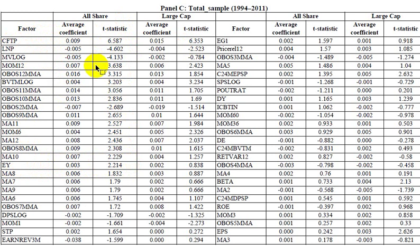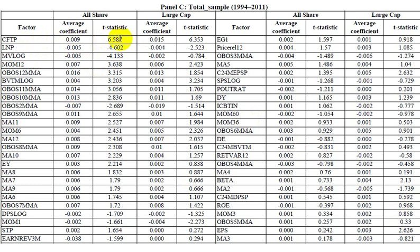Looking at the top significant factors: the most significant one according to the T-statistic is cash flow to price, which is a value metric. This says stocks with a higher cash flow to stock price would have a higher return. Next, we have a couple of size factors — stock price and market capitalization — which are negatively related to returns, so smaller values have larger returns.